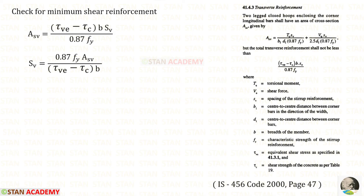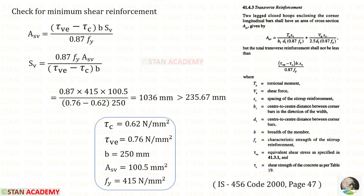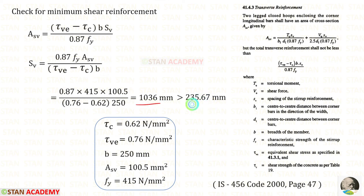We have to find the spacing one more time using the modified formula. After applying all the values, we will get 1036 millimeter, which is more than 235.67 millimeter. Out of these two, we have to select the minimum value, which is 235.67 millimeter.